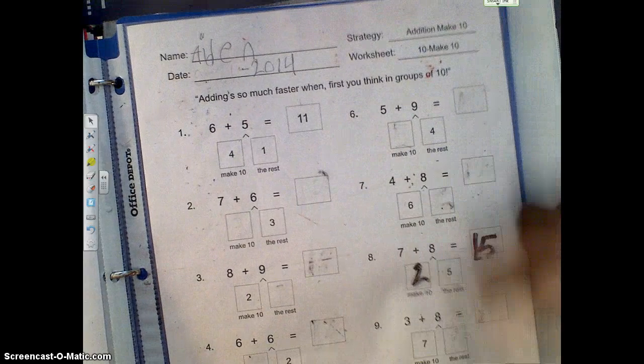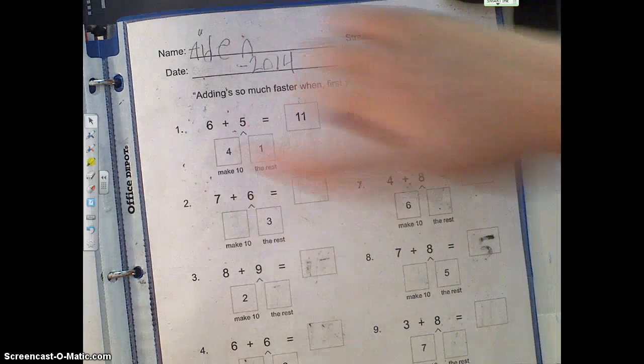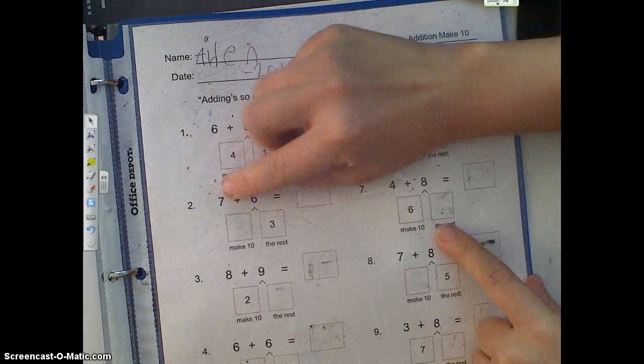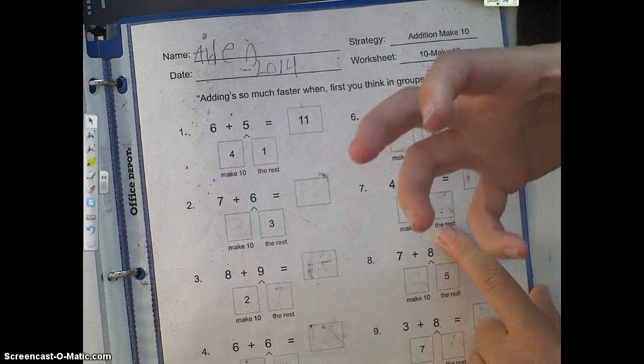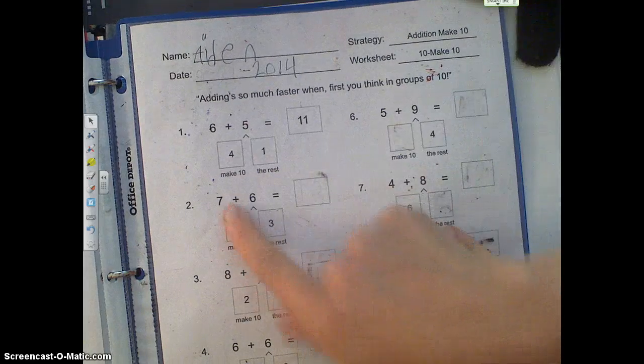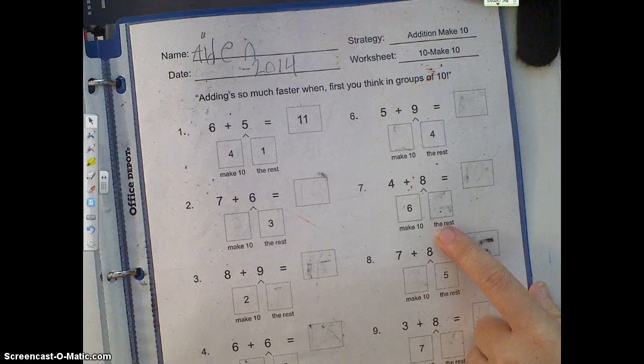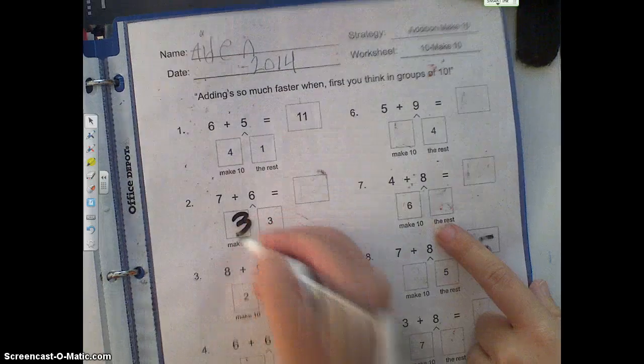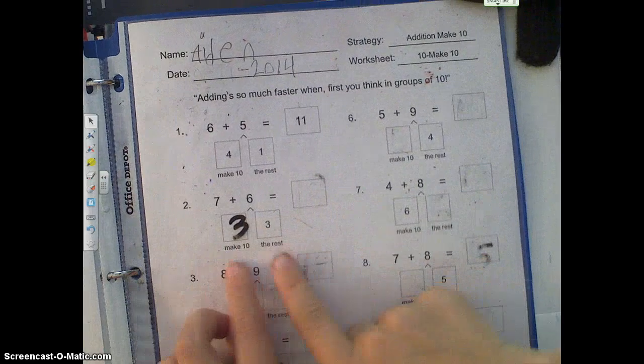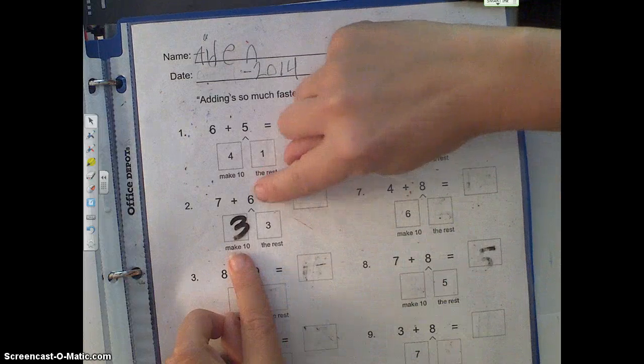So, let's go to number 2. Okay, now we have 7 plus 6. 7 we need to make into 10, right? So how are we going to make 7 plus what equals 10? 3, so you're going to write 3 right there. Now these two numbers go together, 3 plus 3 equals 6. Very good.